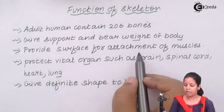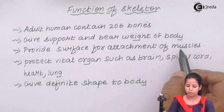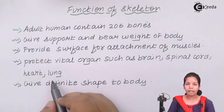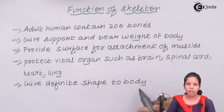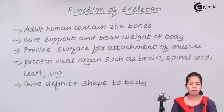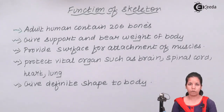It provides surface area for attachment of muscles — this could be your leg muscles, tendons, ligaments, anything. It protects vital organs such as your brain, spinal cord, heart, and lungs, and it gives a definite shape to your body. In vertebrate organisms or mammals, it provides flexible support, and in movement or locomotion, your skeleton system plays a very vital role.